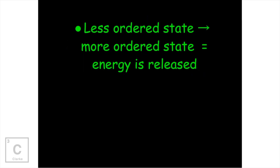And if we're talking about the reverse — a less ordered state, like a gas or even liquid, to a more ordered state, like a solid — we're going to have to release energy. Energy has to be taken out of the system if we're going to get our liquid to freeze or our gas to freeze. In science, we don't really talk about making things colder. You have the presence of heat and the absence of heat.